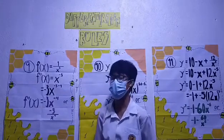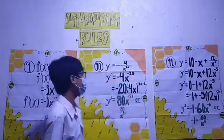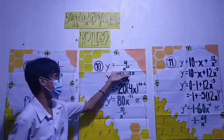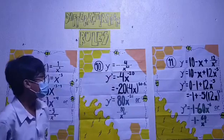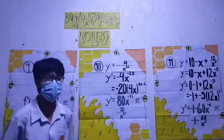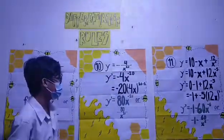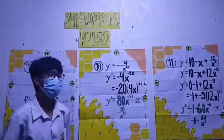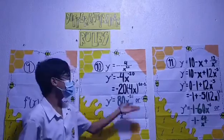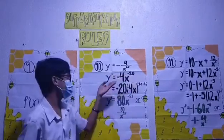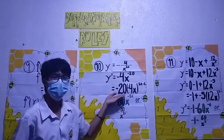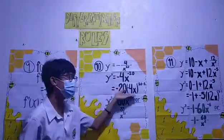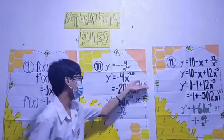Therefore, our f prime of x is equals to negative 3x raised to negative 4, or negative 3 over x raised to 4 in its fraction form. For item number 10, y is equals to negative 4 over x raised to 20. Since our y is also in a fraction form, we will again transform it. So it will be y prime is equals to negative 4x raised to negative 20. Applying the Power Rule, we will put negative 20 right beside our negative 4x, and we will subtract our exponent by 1, so it will be negative 20 times negative 4x raised to negative 20 minus 1.